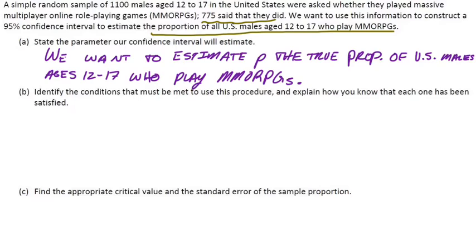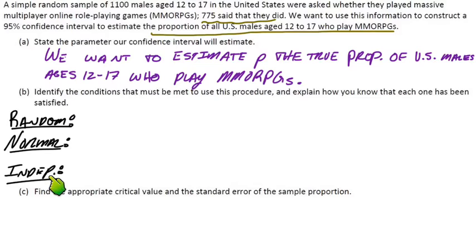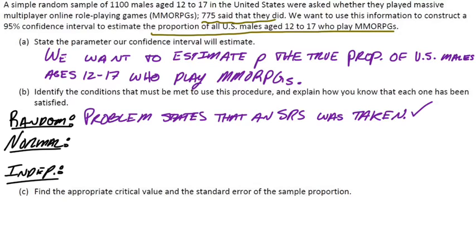So what are the conditions? We know there's three conditions, and we're going to speak to each one and explain how we know that each one has actually been satisfied. The three conditions are random, normality, and independence. As far as randomness is concerned, we should be able to check that off the list. If you look at the second, third word here of the problem, apparently they ran an SRS. It says a simple random sample. So we should be good with randomness, and all we have to say is the problem states that an SRS was taken. So randomness is given in the problem, check.